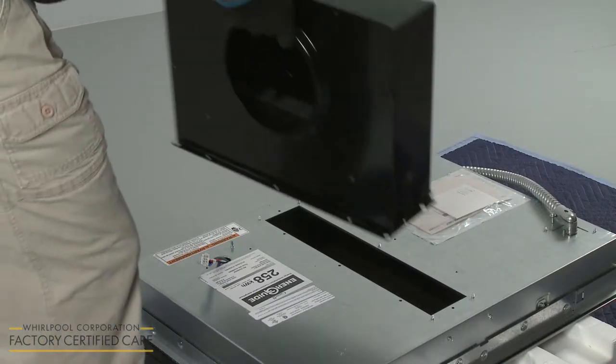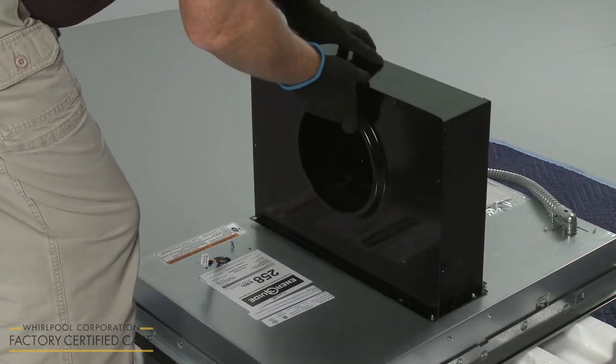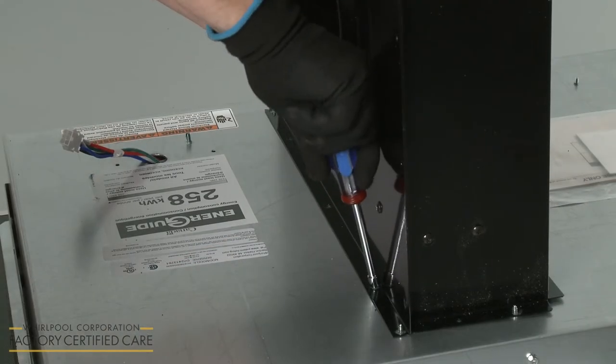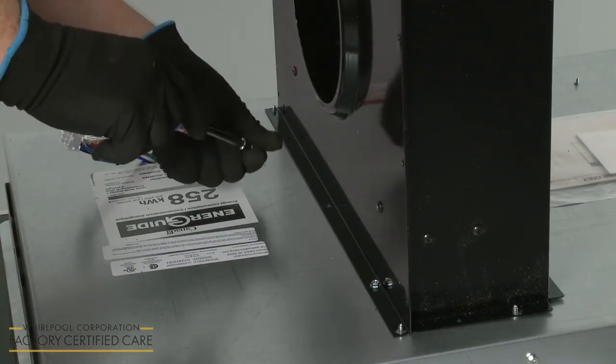Position the plenum on the cooktop base so the round opening faces the wire harness. Using a quarter-inch nut driver, thread and tighten the six screws to secure the plenum.